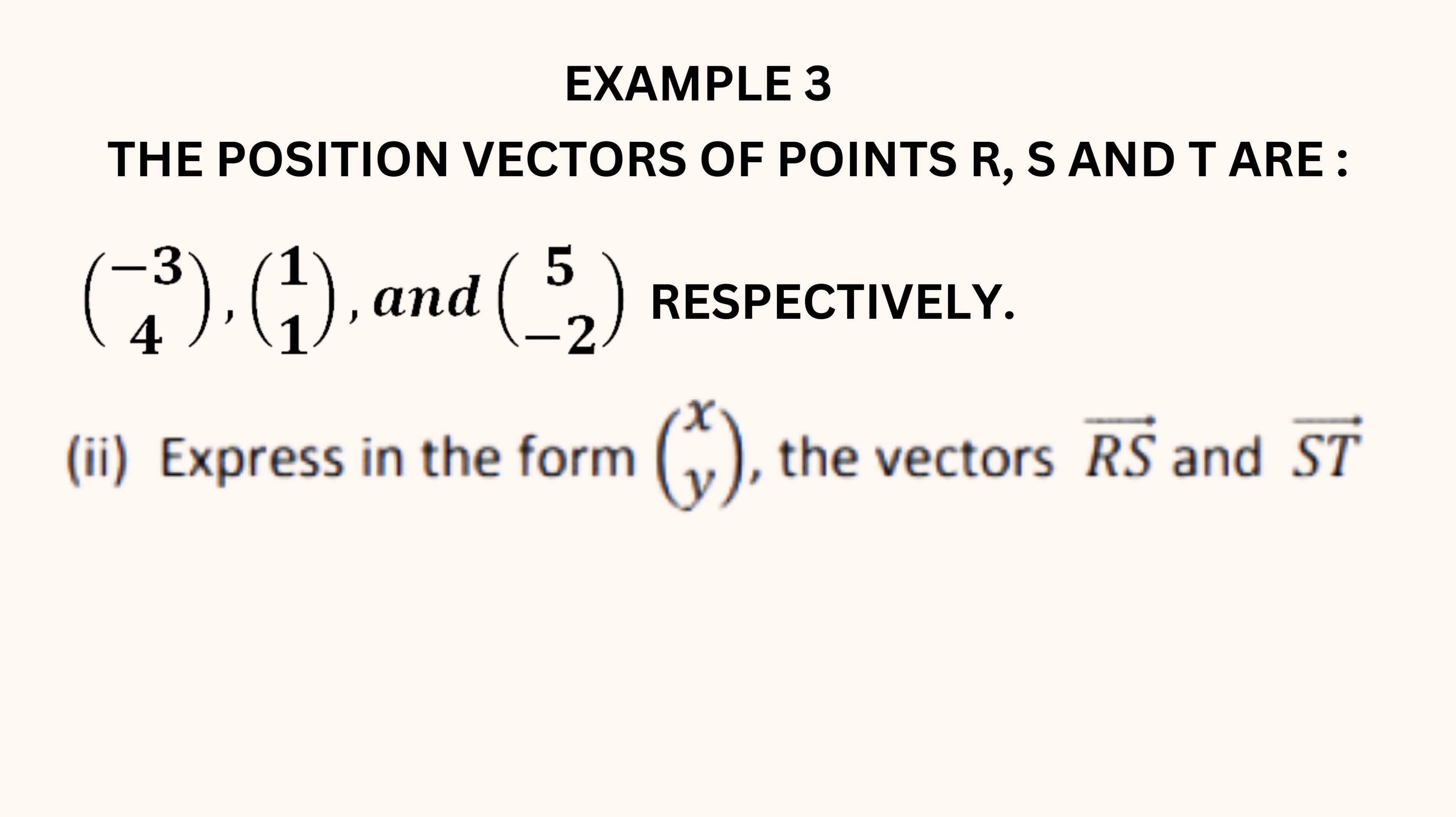To find the vector RS, we can reverse the points and subtract. A position vector has the same values as the coordinates for the respective points. Hence, we know the position vectors given represent the coordinates for R, S and T. Vector RS is S minus R. 1 minus negative 3 is equivalent to 1 plus 3, which is 4. Below we have 1 minus 4, which is negative 3.